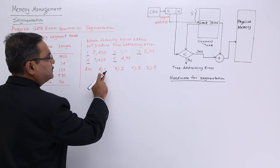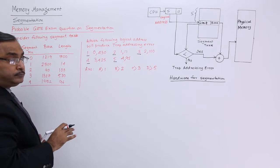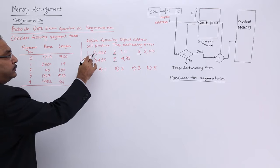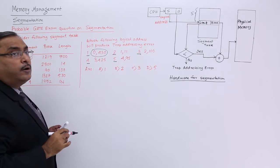Answer is logical address 2, 3, and 5. Now for the first one, how to read this? This is the segment number, and this is the offset.